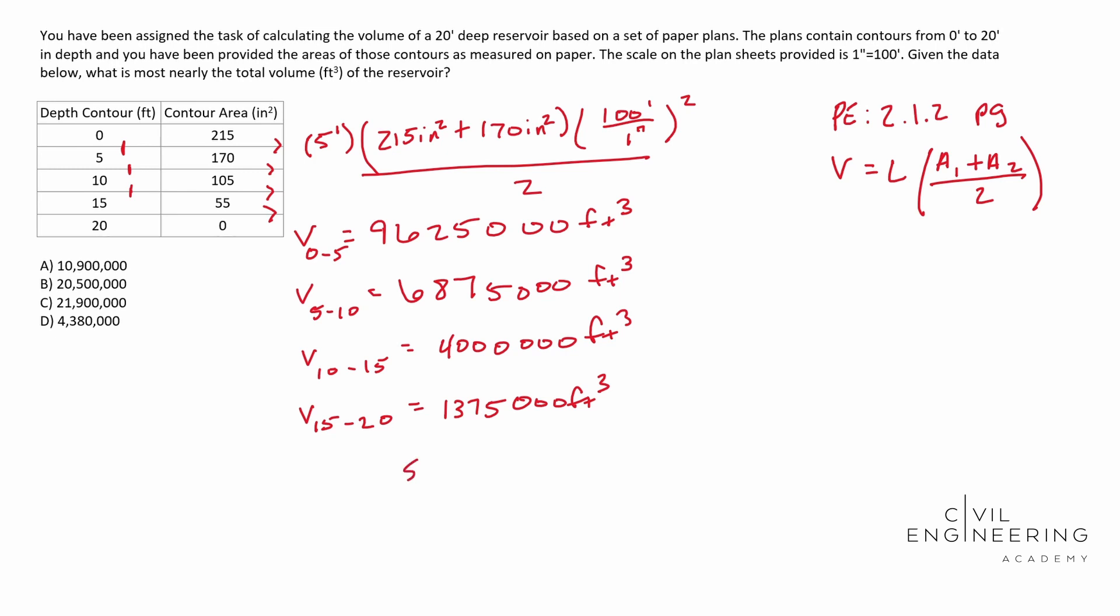whenever you add all of these guys up, the volumes, you should end up with 21,875,000 cubic foot. And if you're curious if this is reasonable, if we're going to convert that over to cubic yards, it ends up being about 810,185 cubic yards. So pretty realistic for a 20-foot deep reservoir. And I mean, if you think about it, 215 inches squared with a scale of one inch to a hundred foot, that's a pretty big contour. And so, yeah, this is a realistic problem. We have a massive reservoir. The answer ends up being C.